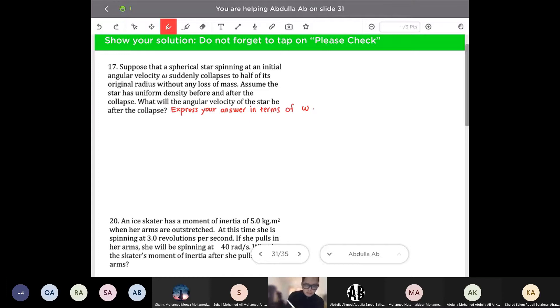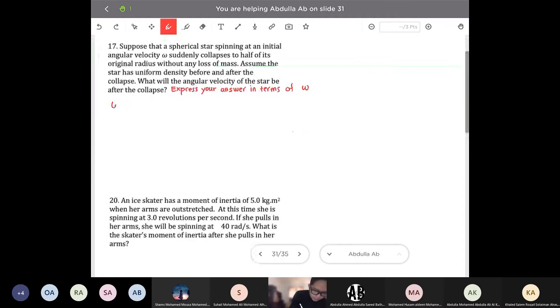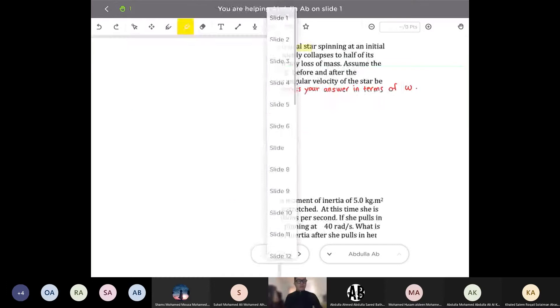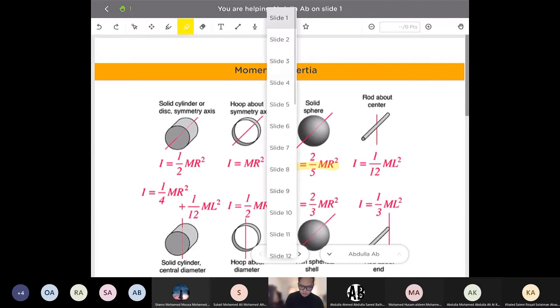Now, what do we have in the problem? We are given that the initial angular velocity of the star is omega. So we say omega initial is equal to omega. We are also given that the star is of a spherical shape and has a uniform density. So if we go to slide number one where we could find the moment of inertia of different objects, we have a solid sphere. This is what we're going to use for the star. It is a sphere with uniform density. So solid sphere, that's 2 over 5 m r squared.